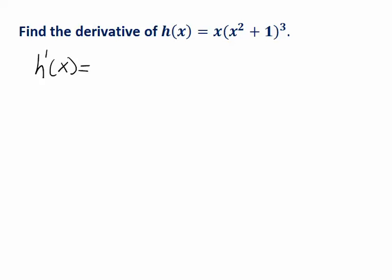The product rule tells us we're going to differentiate one function and not the other, and then do it the other way and add the results. So one way to express that is this: we're taking the derivative of the first function, the x.